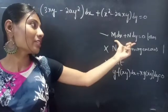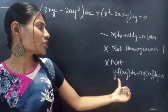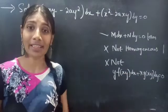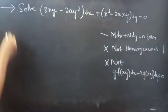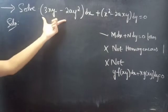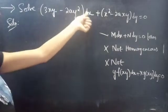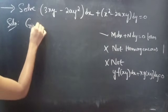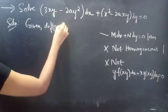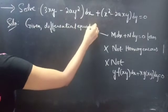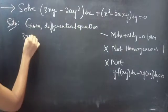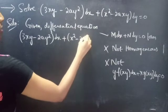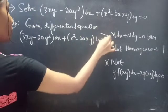It is in M dx plus N dy equals to 0 form, and it's not homogeneous, and also it is not in y times some function of xy times dx plus x times some function of xy times dy equals to 0 form. So let's get going. Problem: Solve (3xy minus 2ay²) dx plus (x² minus 2axy) dy equals to 0.